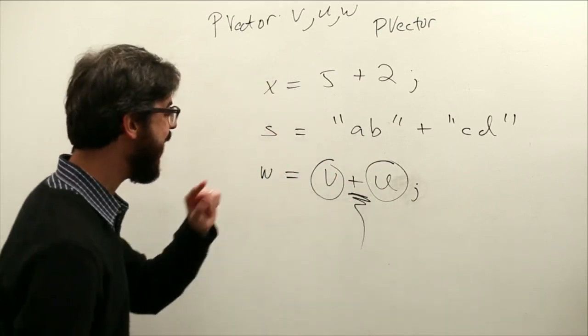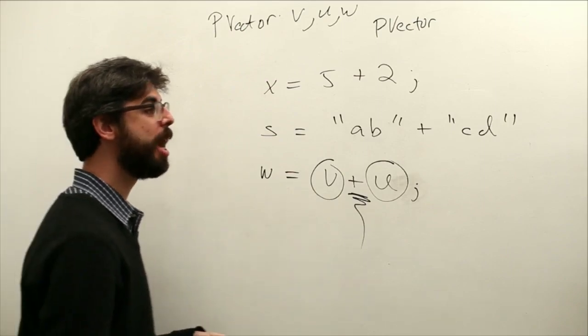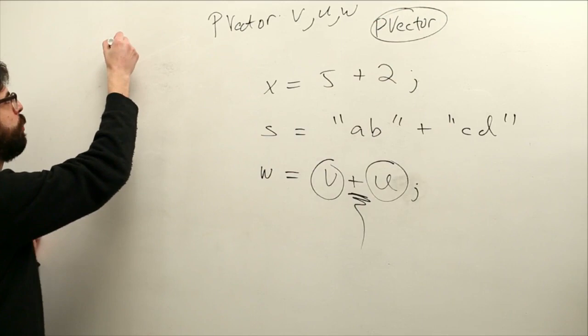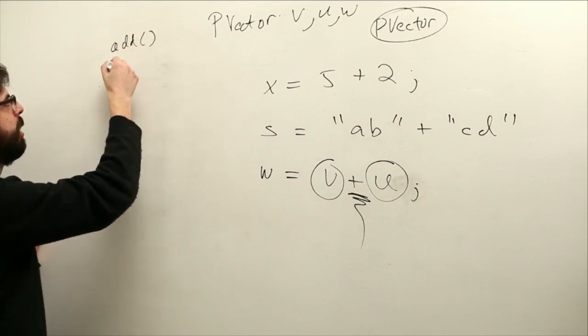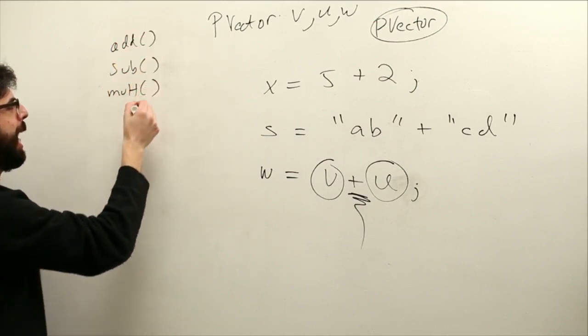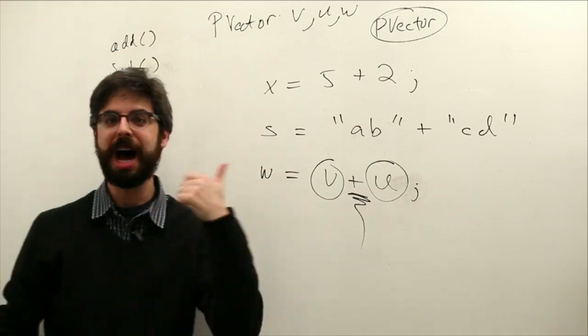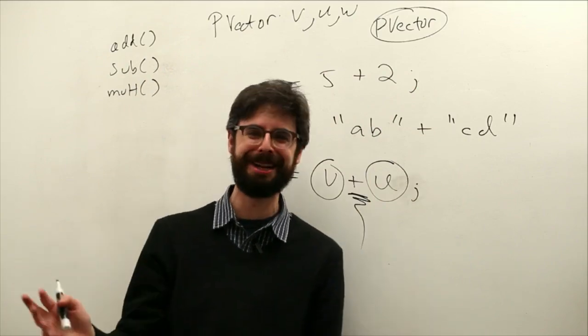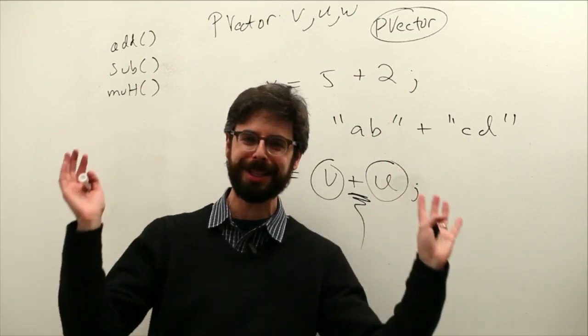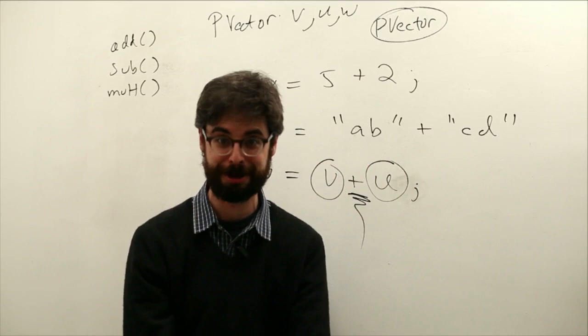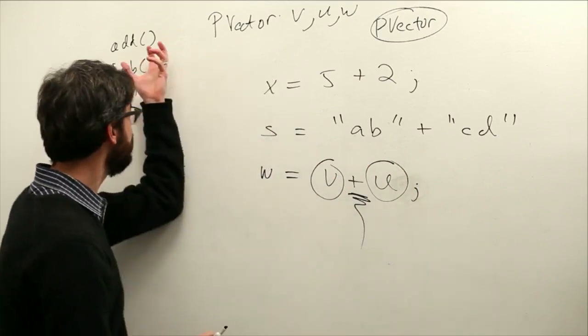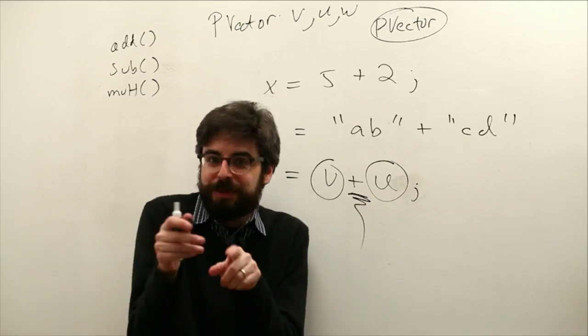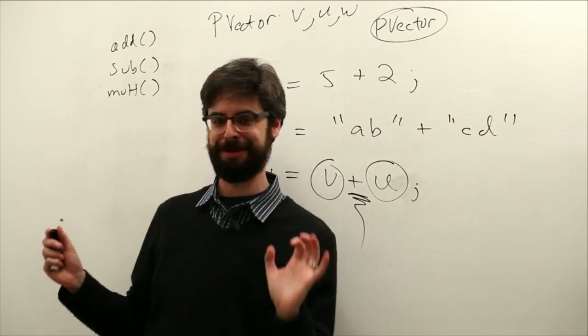So yes, we want to do addition, but addition the plus operator is reserved only for primitive numbers and for strings. So in order to add two PVectors together, we have to use methods that are in the PVector class. Those methods, we can make a list of them. Add, subtract, multiply, normalize, dot product, cross product, limit. Oh my goodness, there's so many. We could go through the whole list. That's what the next video is going to be about.